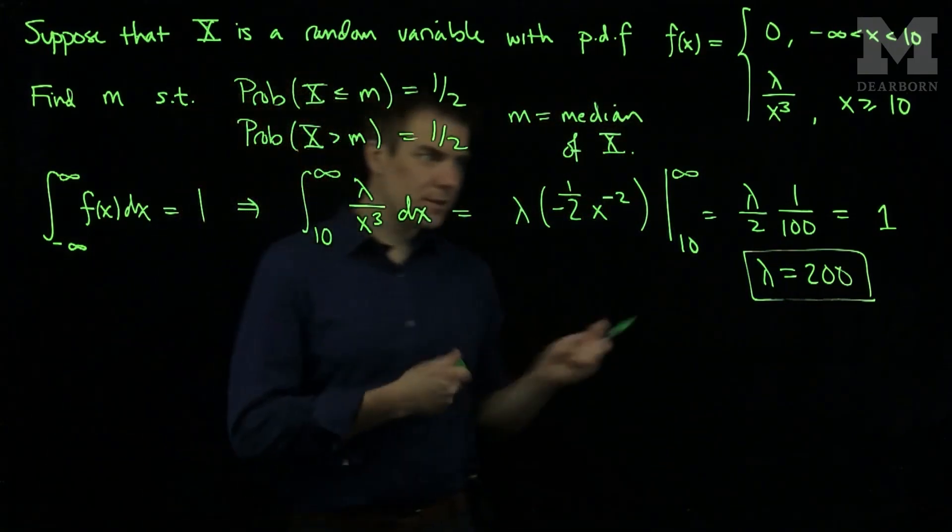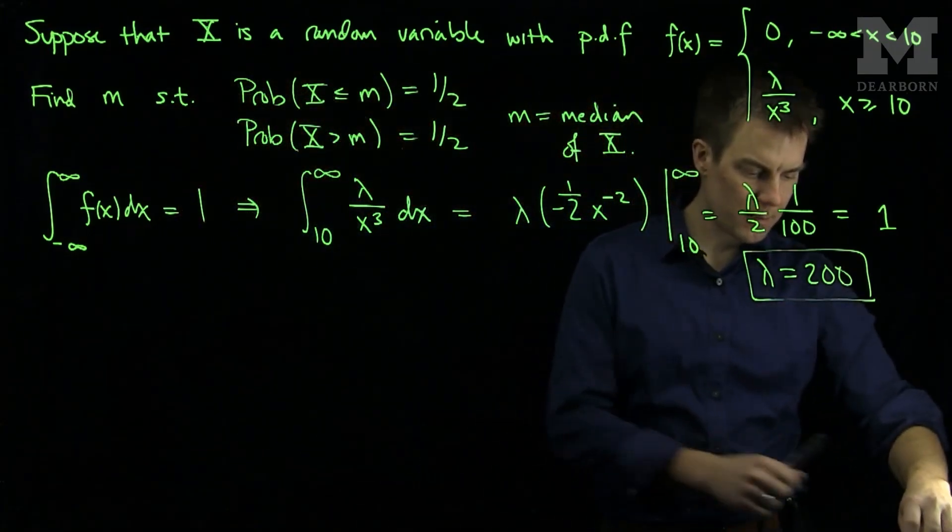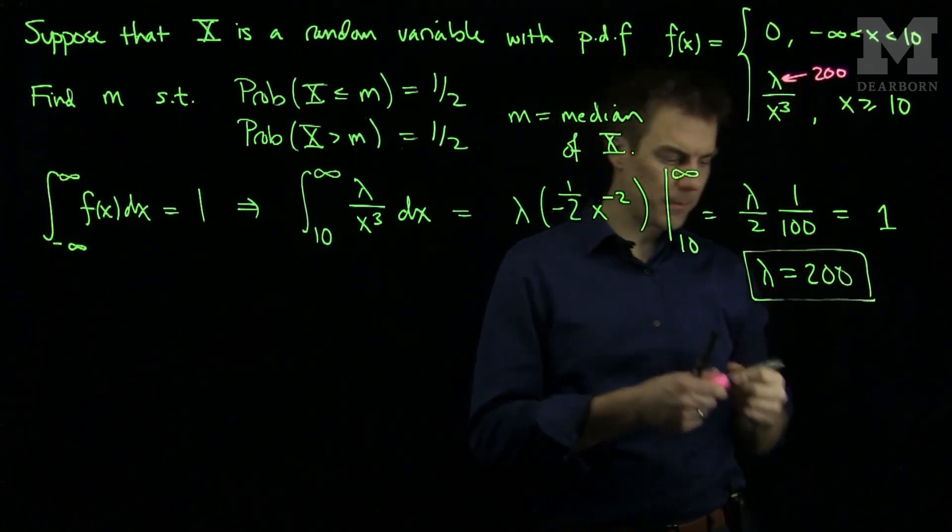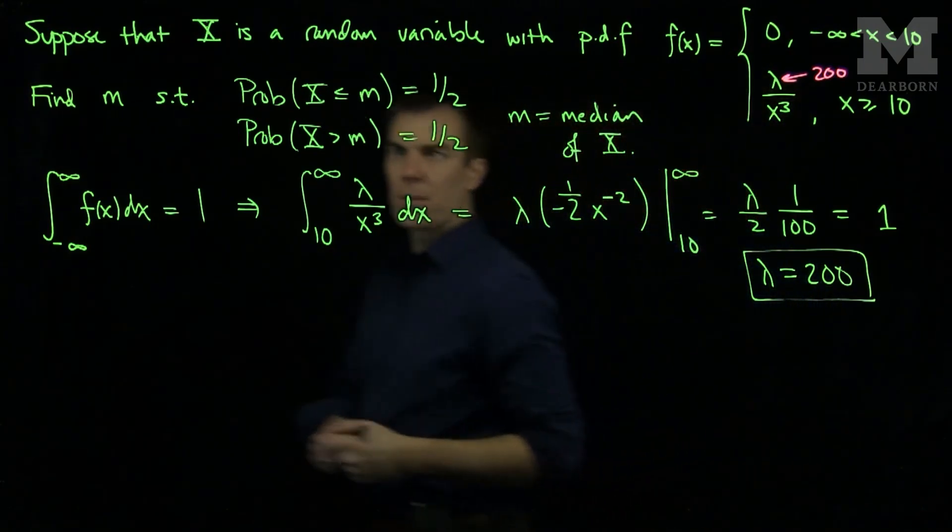So we can update what our pdf is. Now our pdf can be updated and we can say this value of lambda is 200. And so now we compute the probabilities.